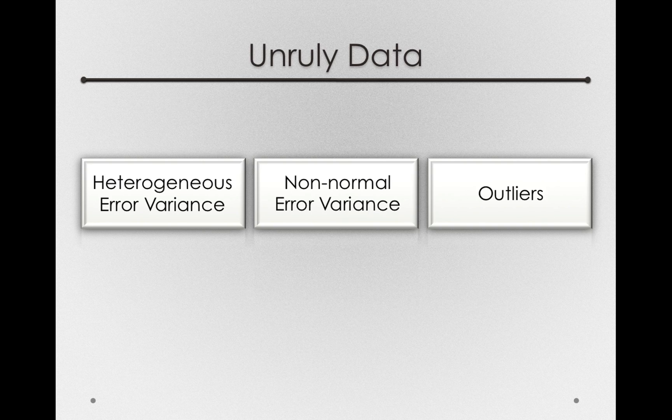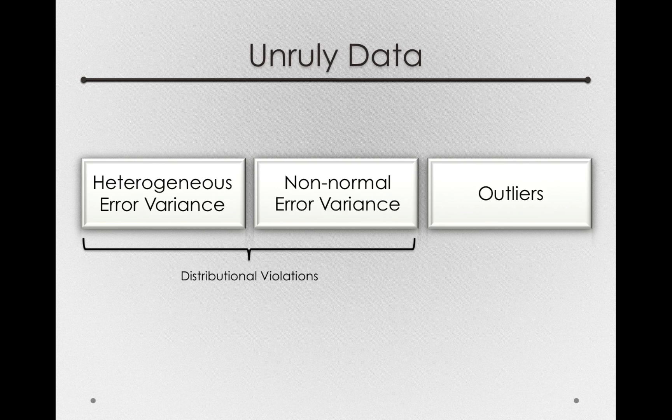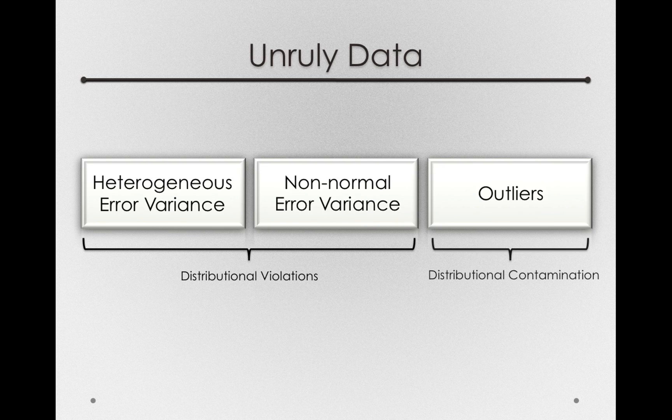These first two categories of unruly data really represent distributional violations. And by that I mean a violation to what we're assuming in our model and tests about the true state of the world. They're violations because it's a mismatch between what we're assuming to generate our p-values and what the state of nature actually is. This final category is really distributional contamination.